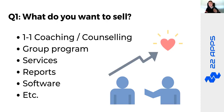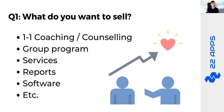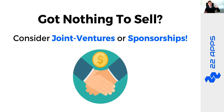It depends on two things: number one, what the offer is — is it a group program, one-on-one, a service, software? And number two, what is the price — is it premium, mid-range, or low-end? This dramatically affects how much convincing a prospect needs. Something at $27 needs a lot less convincing than something at $1,997.